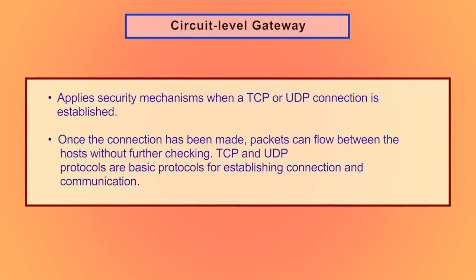Circuit-level gateways apply security mechanisms when a TCP or UDP connection is established. Once the connection has been made, packets can flow between the hosts without further checking. TCP and UDP protocols are the basic protocols for establishing connection and communication.